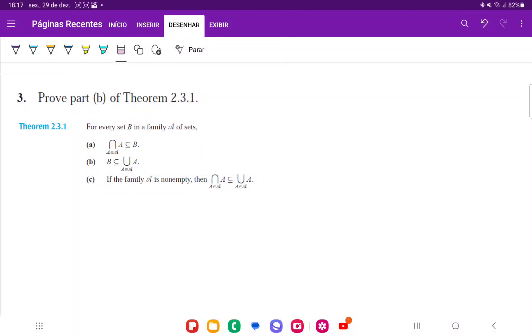Okay, so for exercise 3, we're trying to prove part B of Theorem 2.3.1, which says that for every set B in a family A of sets, that B is a subset of the union over A.